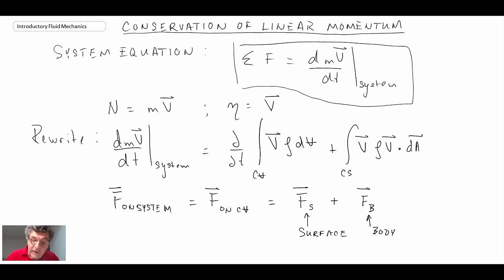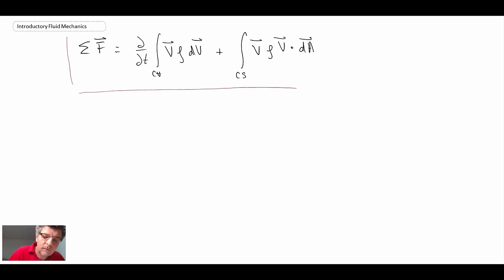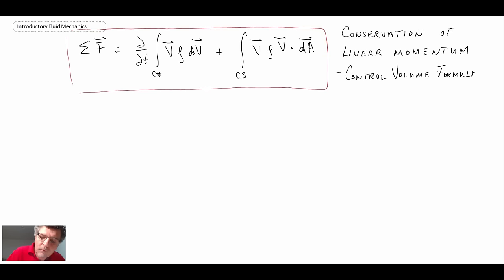So with that, we put these two together, and what we get is the equation for conservation of linear momentum. So this is conservation of linear momentum for a control volume.